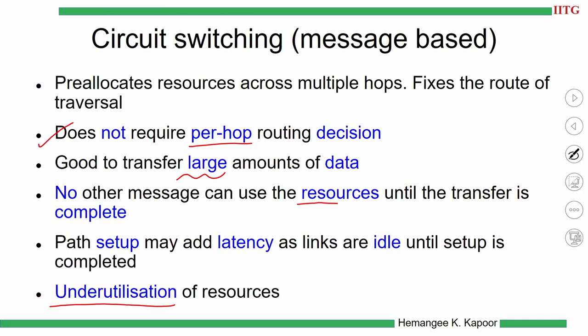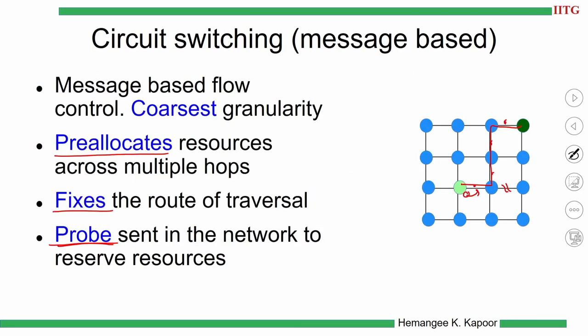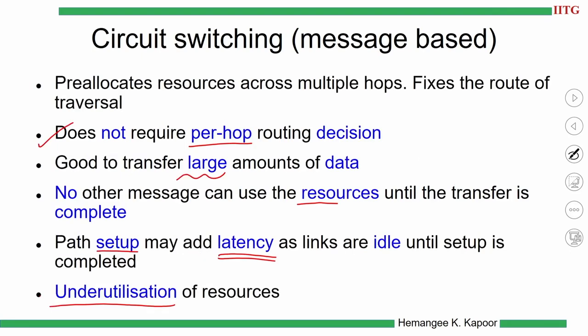Disadvantages of circuit switching: first, when large amounts of data are passing, no other message can use those resources until the complete transfer is done, leading to underutilization. Second, you need to set up the path first using the probe, which adds latency — the probe moving from source to destination is extra time. You get an acknowledgement back confirming the path is reserved, which is additional setup latency.